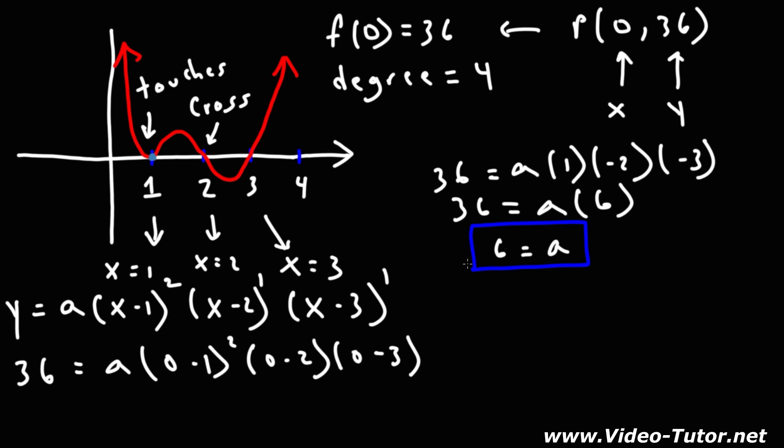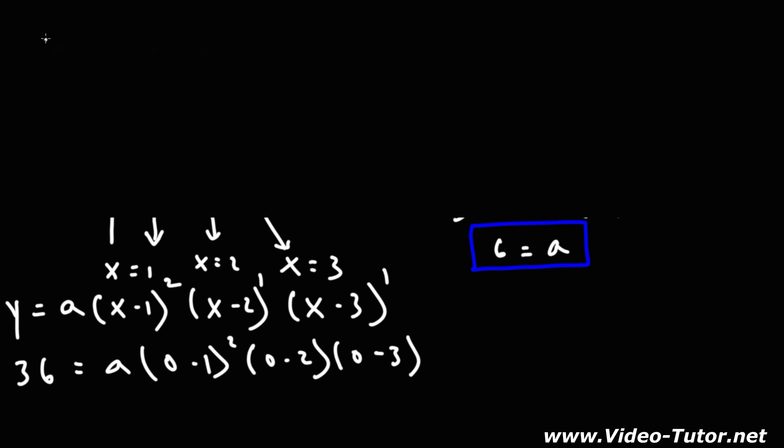Now that we have our a value, we can write the equation of the polynomial function in factored form. So it's 6 times x minus 1 squared times x minus 2 times x minus 3. So this is the answer in factored form.